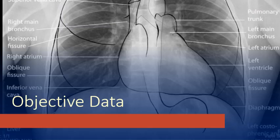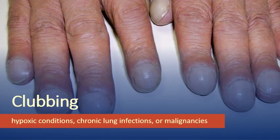Now let's talk about gathering objective data for your patient with respiratory problems. During physical assessment, one thing to watch out for is clubbing. Clubbing is common as an indication of hypoxia and is found in cyanotic or hypoxic conditions, especially among people with chronic lung infection and malignancy. Clubbing refers to the thickening of your fingertips.